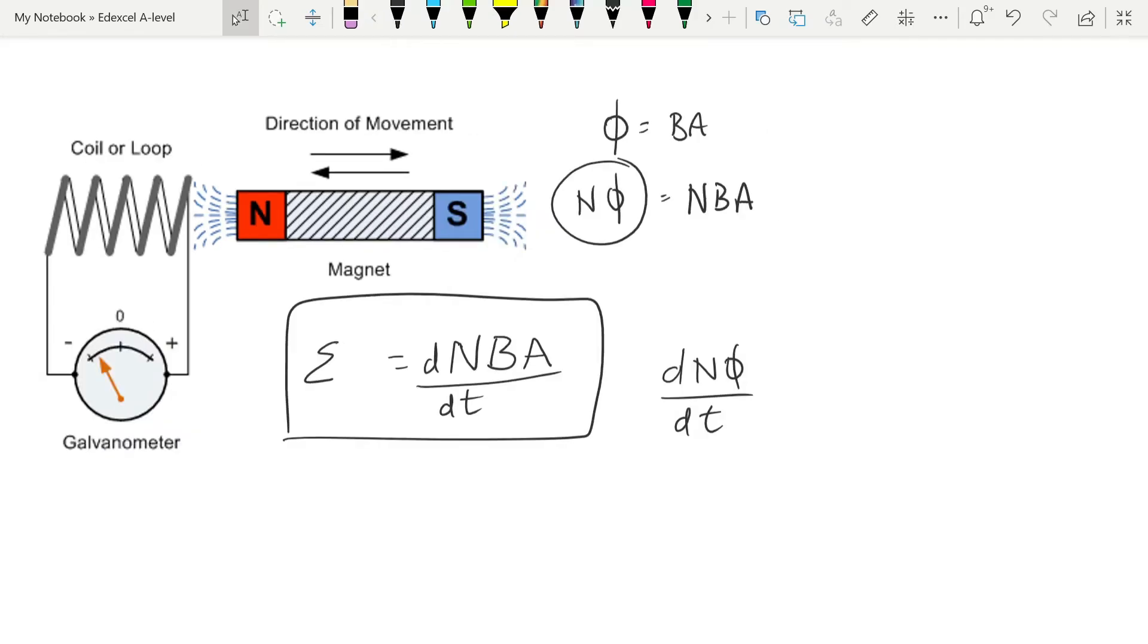Now, the direction of the induced EMF is very important. Because that's going to determine the direction of the current. And in a loop like this, if you have an EMF induced, you're going to get a current because you have a complete circuit. The problem, of course, with putting a current through a coil of wire is that putting a current through a coil of wire makes the coil a magnet itself. And so let's look at a scenario whereby we had different directions of current passing through the coil.